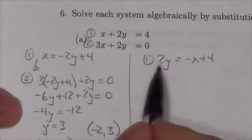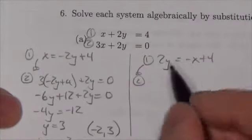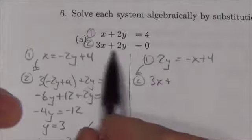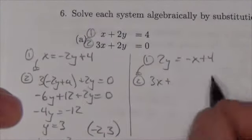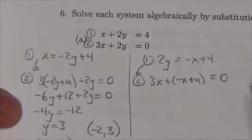Now that 2y term shows up in the second equation as well, meaning I could substitute this into equation 2 to get 3x plus, well now I know that 2y equals negative x plus 4, so it's going to be negative x plus 4, and that equals 0.